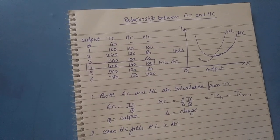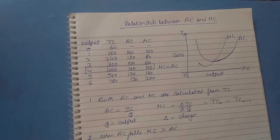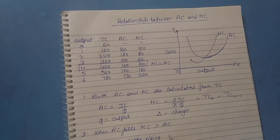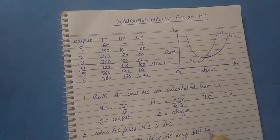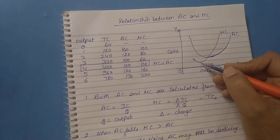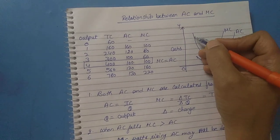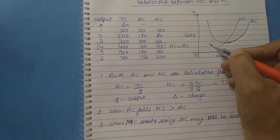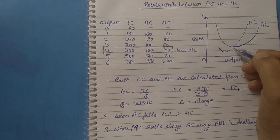The third point is: when MC starts rising, AC may still be declining. After reaching the minimum point, MC starts rising, but at this stage AC is still declining. As you can see, this is the minimum point of the MC, but MC starts rising while AC is still falling.